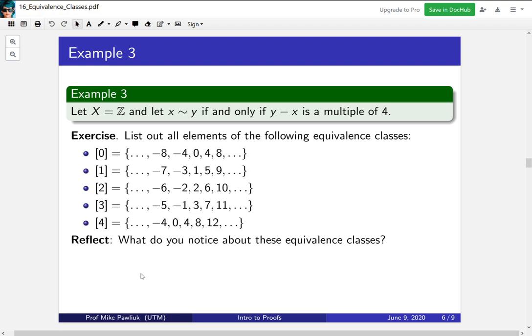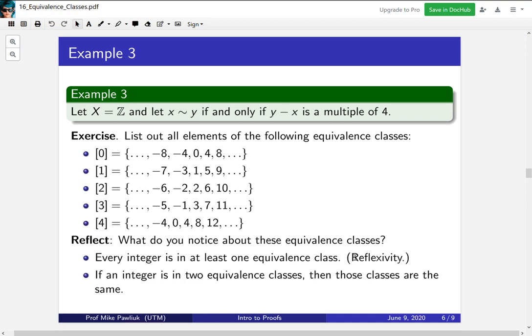Now I want you to take a moment and reflect. What do you notice about these equivalence classes? Are there any observations you can make? Take a moment to make some observations now. So two things that I notice are that every integer shows up somewhere in here. And one way to see that is, well, let's start at zero for now. This will be 0, 1, 2, 3, 4, 5, 6, 7, 8, 9, 10, 11, and then it keeps looping. And then if you go down, it will be 0, -1, -2, -3, -4, -5, -6, -7, etc. So everything's going to be in one of these classes. Another way to see it is that everything will be in at least one equivalence class because it will be in its own equivalence class.